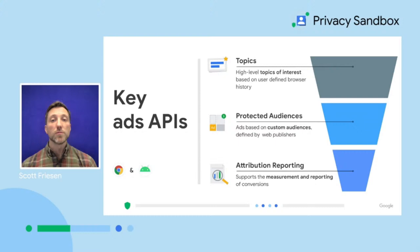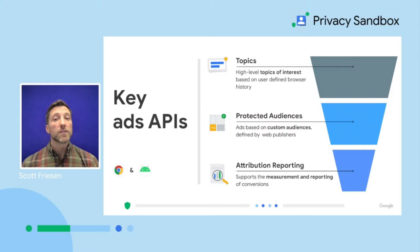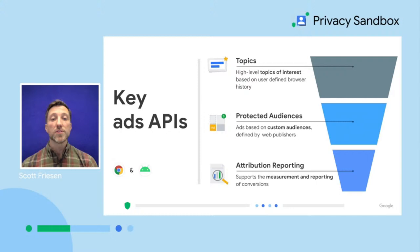There are three main advertising-focused APIs. We generally expect they will be most useful at different stages of the marketing funnel. Topics and Protected Audience are known as the Relevance APIs. Topics provide high-level signals of a user's interest, which may be combined with contextual signals and first-party data to select relevant ads. Protected Audience supports more granular remarketing use cases, where marketers want to reach audiences who've shown interest in specific brands or products in a privacy-preserving way. Attribution Reporting is the Privacy Sandbox proposal for privacy-preserving campaign measurement, providing aggregated performance reports on view-through and click-through conversions.